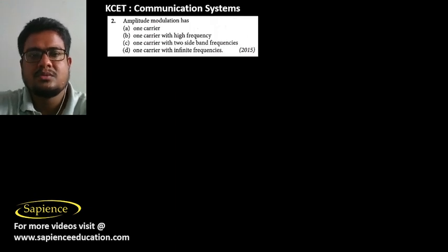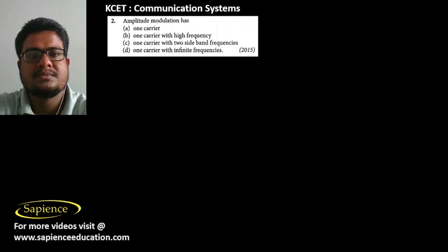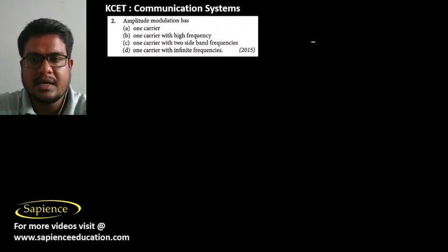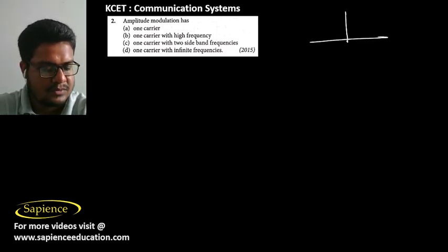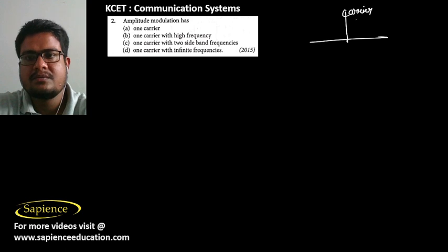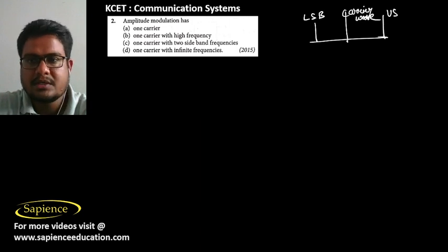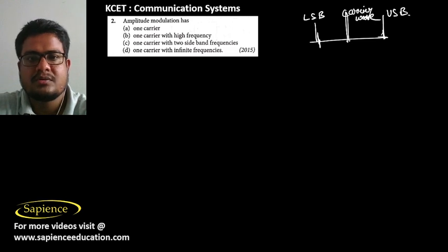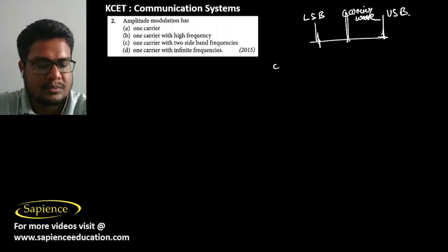In question number 2, amplitude modulation has one carrier wave, one lower sideband frequency, and one upper sideband. So it has one carrier wave with two sidebands. Option C is the correct answer.